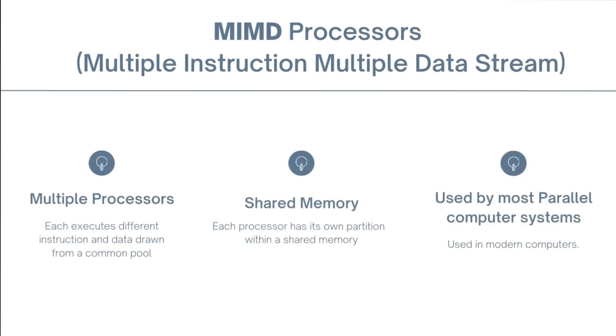Next we have MIMD processors, or multiple instruction multiple data stream. It has multiple processors that each execute different instructions, and the data is drawn from a common pool. So here we have multiple instructions and multiple data streams. They have a shared memory, which means that each processor has its own partition within the shared memory, and is used mostly by parallel computer systems, such as in modern computers.